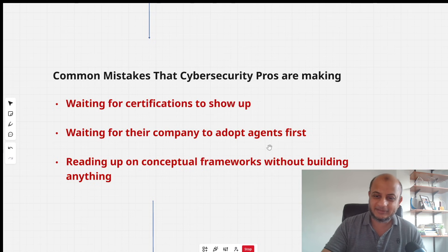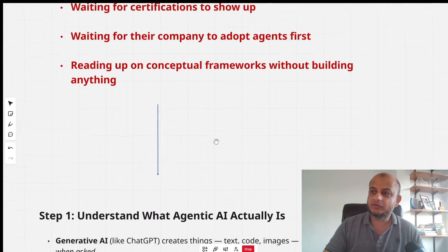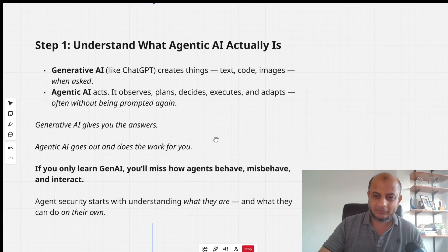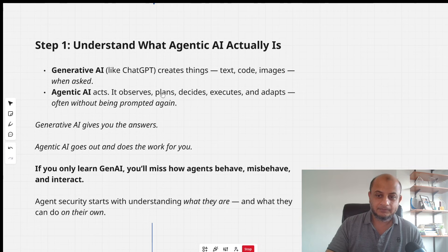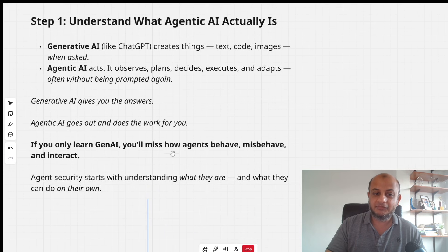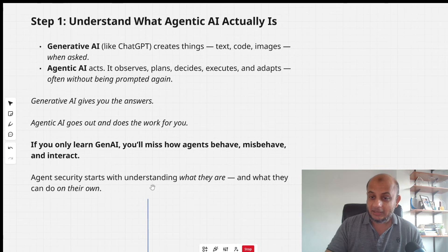So what is the way to learn agentic AI? First, I want you to understand what agentic AI actually is. A lot of people still think it's just generative AI wrapped over some APIs. Generative AI like ChatGPT creates things — text, code. Agentic AI's biggest step forward is that it acts; it is able to take action autonomously without being prompted. Simply put, generative AI gives you answers; agentic AI goes out and does the work. If you only think in terms of generative AI, you will miss how agents behave, misbehave, and interact. Agentic AI security starts with understanding what they are and what they can do on their own.